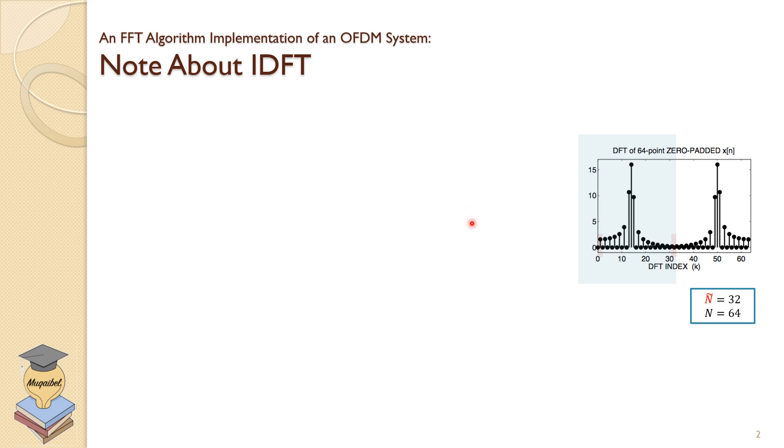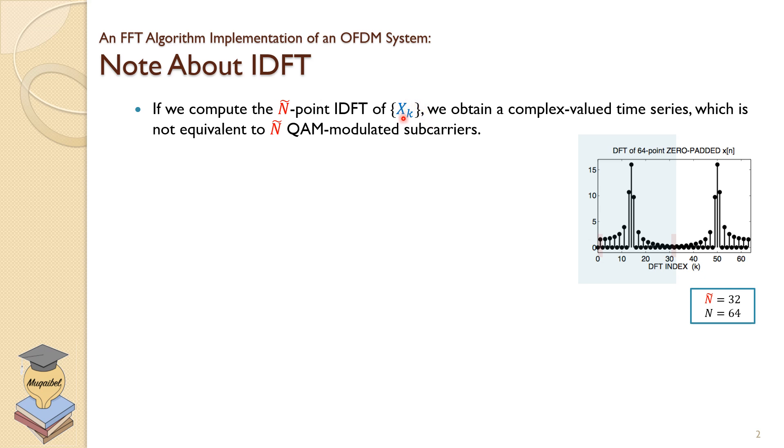Now, here's one note about IDFT. Remember that there are certain conditions for real signals—the spectrum magnitude has to be even and the phase has to be odd. If we compute the inverse Fourier transform for the sequence X, which is the information sequence, we obtain in general a complex-valued time series.